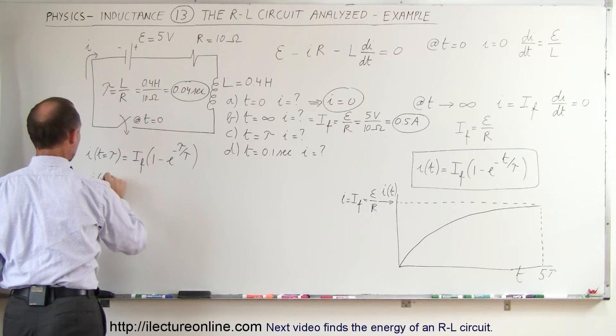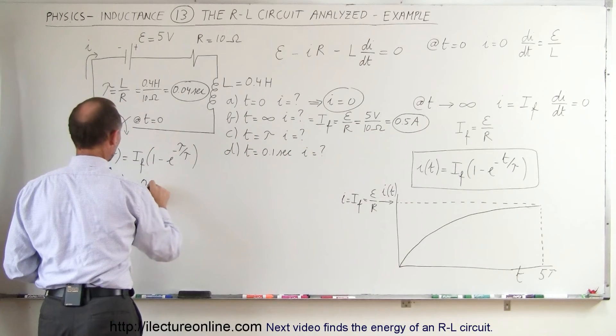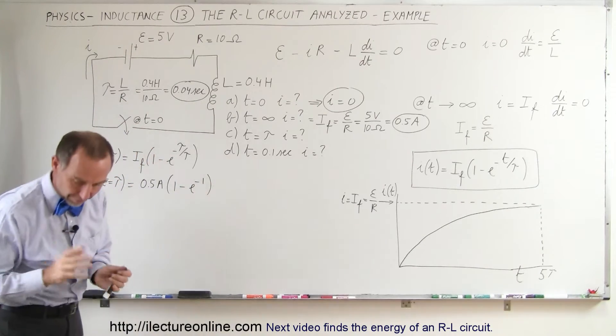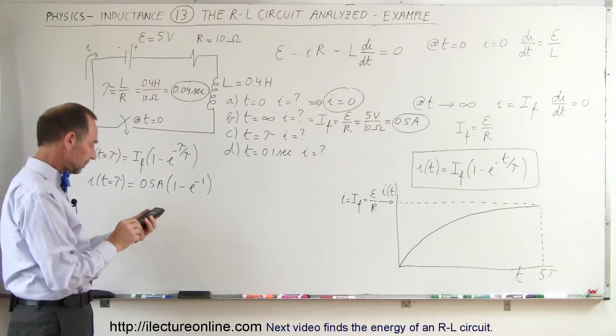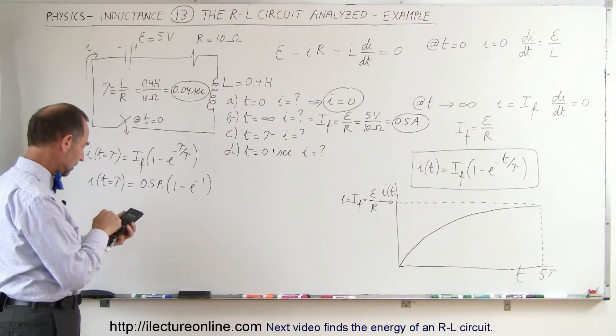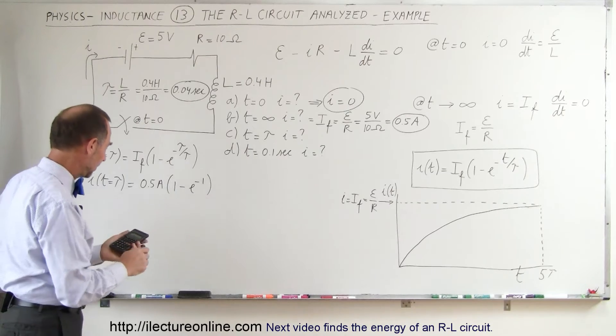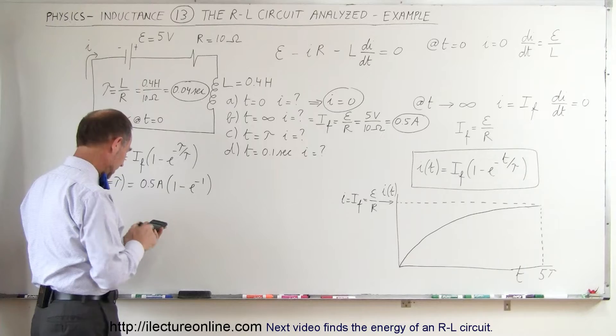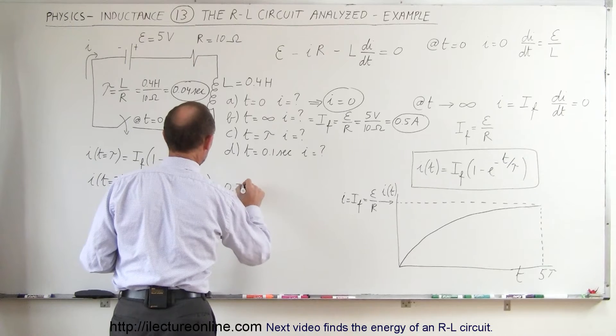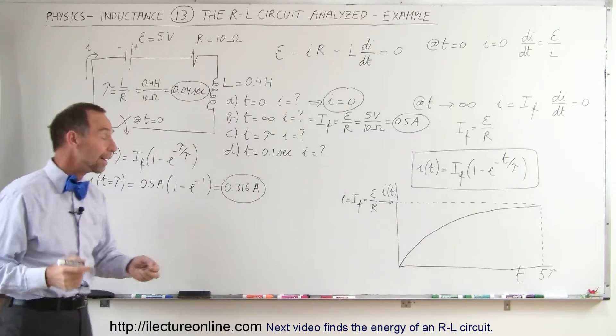So we get I, when T is equal to tau, is equal to the final current, which we know is 0.5 amps. 0.5 amps times 1 minus E to the minus 1. All right, for that we need a calculator. So we have 1, make that negative, take that as an exponent and subtract that from 1. And so we have, that times 0.5, and we have 0.316 ohms. So this would be 0.316 amps, not ohms, but amps.